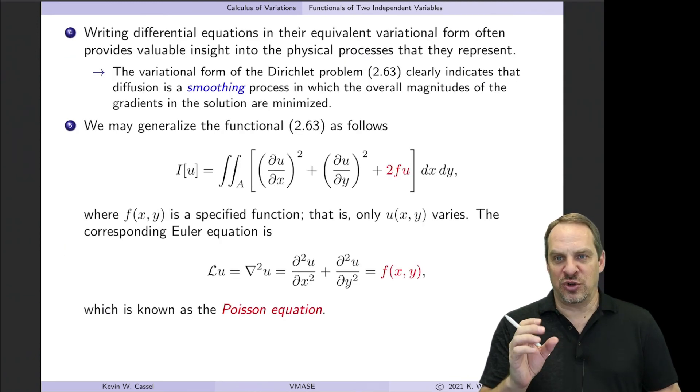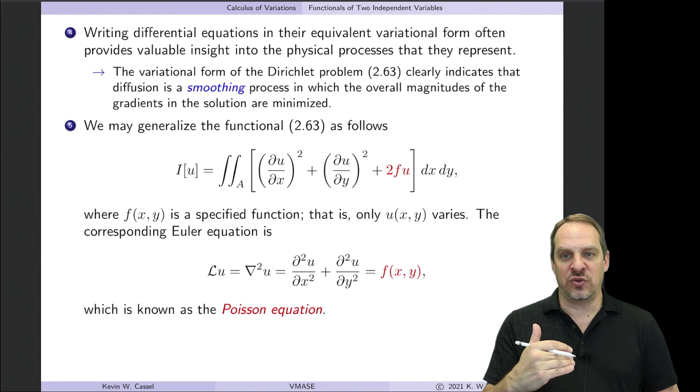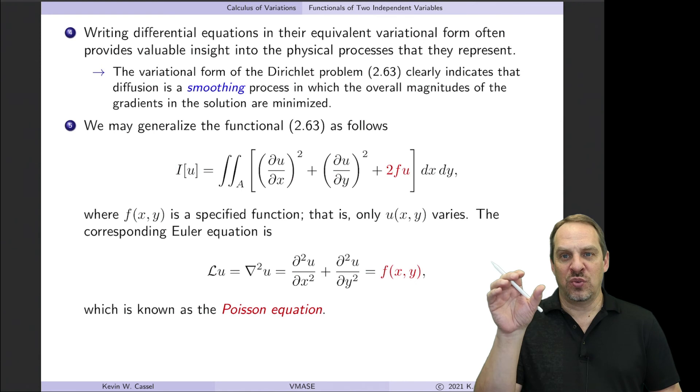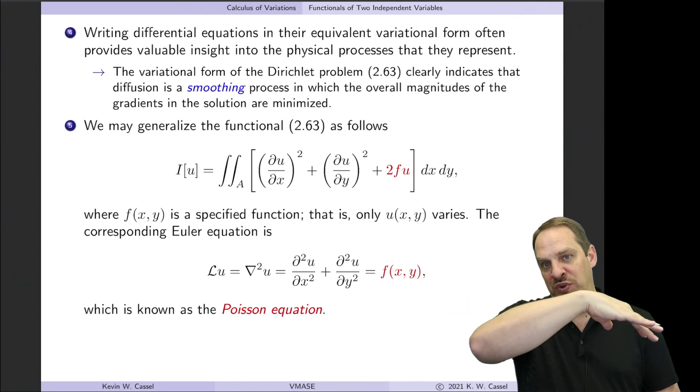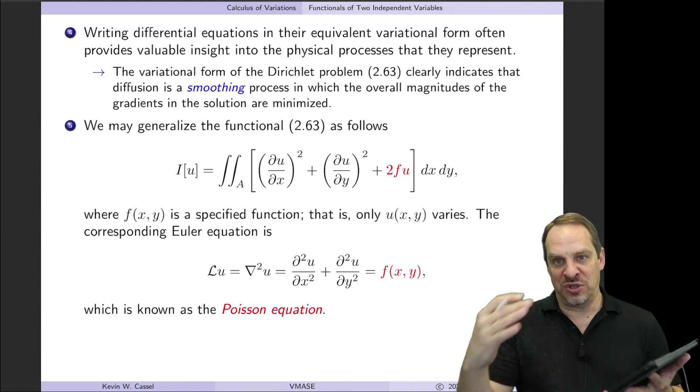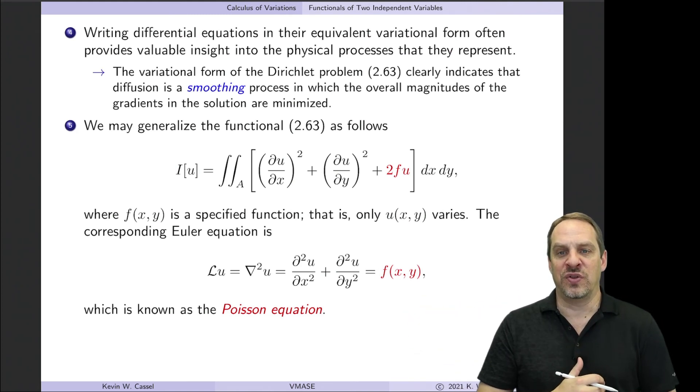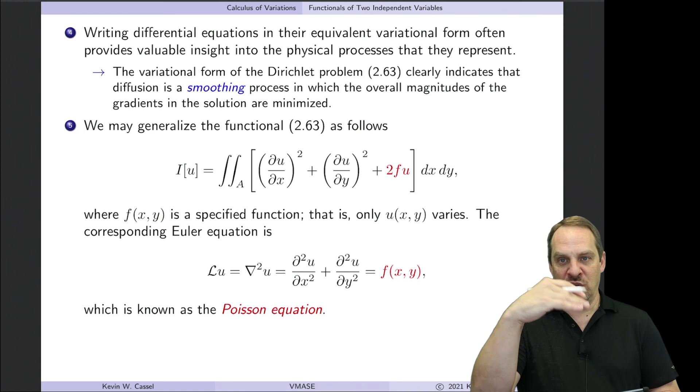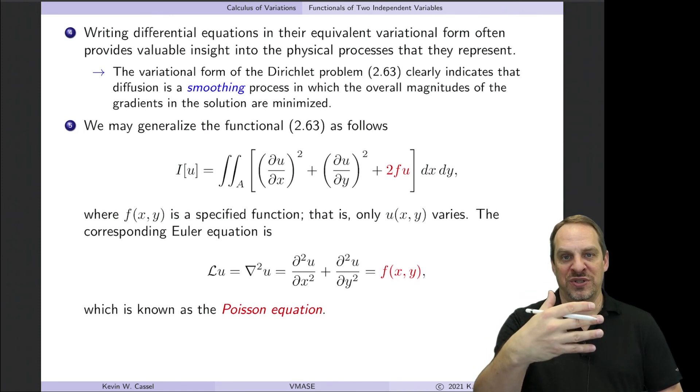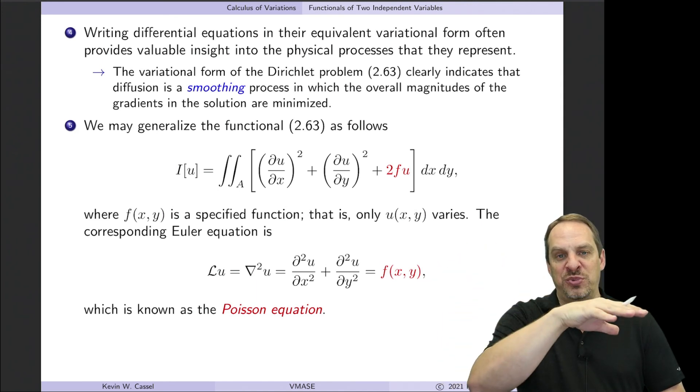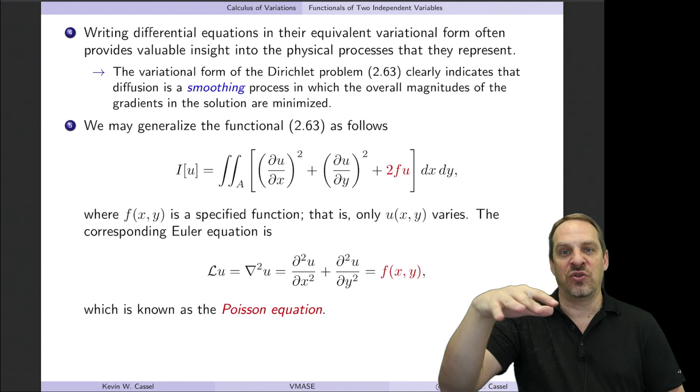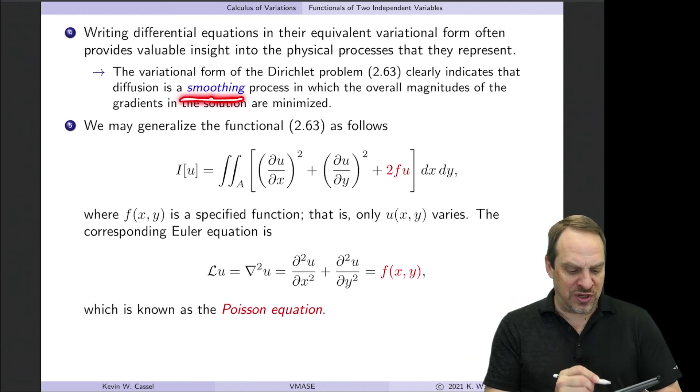So let's come back to this physical interpretation. Think about what this variational form is telling us about these diffusive processes. So remember what we said. We're minimizing the magnitudes of the derivatives of the gradients, the slopes, around the entire domain. So we can't make them all zero because you have to have some temperature distribution given the boundary conditions and so forth. But what you want, according to Laplace's equation and the variational form more specifically, is for it to be as smooth as possible such that the gradients and the slopes are as small as possible in an integrated fashion throughout the entire domain.